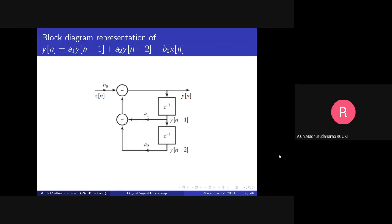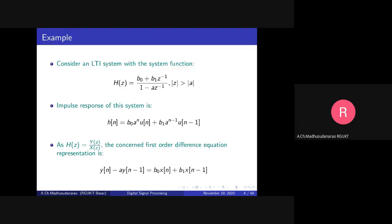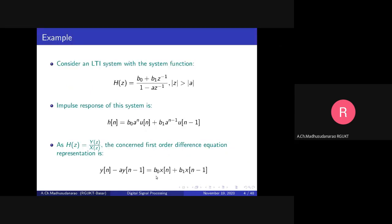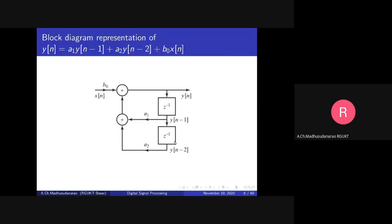This is the block diagram representation for this particular system — the difference equation. We should get y(n) = b0*x(n) + b1*x(n-1) + a*y(n-1). Let's see how to build this from the signal flow graph.